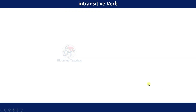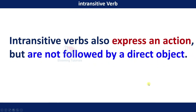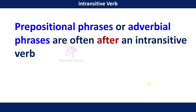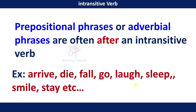Intransitive verbs also express an action but are not followed by a direct object. Instead, prepositional phrases or adverbial phrases often follow an intransitive verb. Examples of intransitive verbs include: arrive, die, fall, go, laugh, sleep, smile, stay, etc.